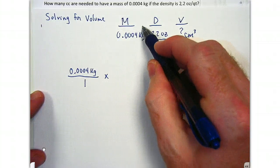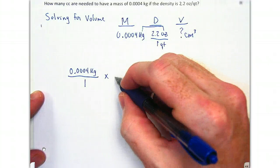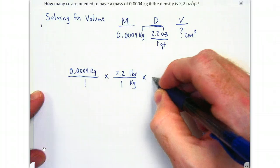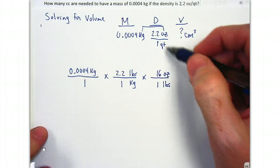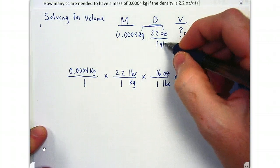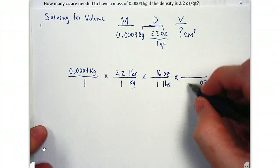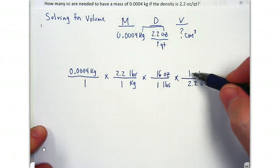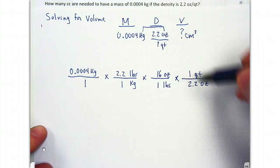We transition kilograms to ounces to match the mass unit in density. From kilograms to pounds: one kilogram for every 2.2 pounds. Then pounds to ounces: one pound for every 16 ounces. Now we're at ounces, so we stop and insert our density. The density is written as ounces over quarts, but we need ounces on the bottom to cancel out. This is not a problem — 2.2 ounces per quart is interchangeable with one quart per 2.2 ounces. When going from mass to volume, you always flip the density over in dimensional analysis.